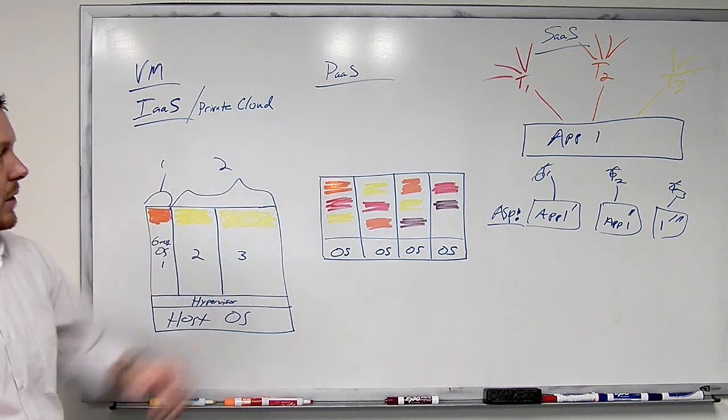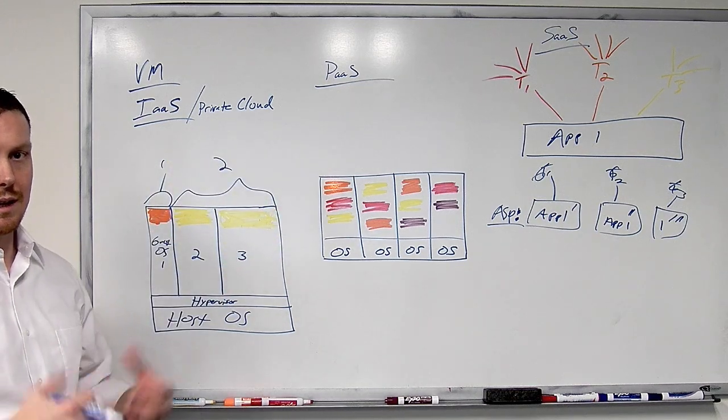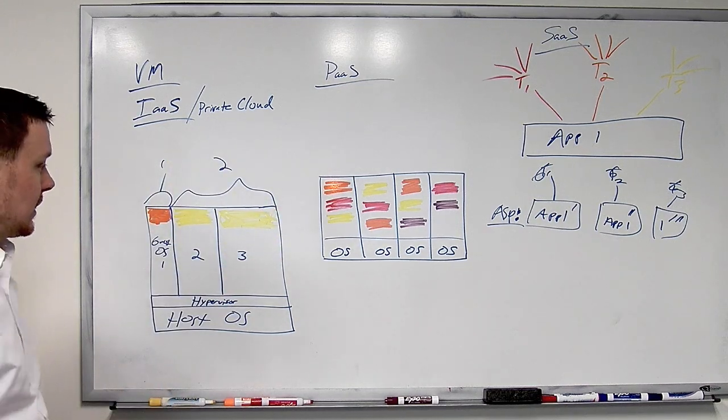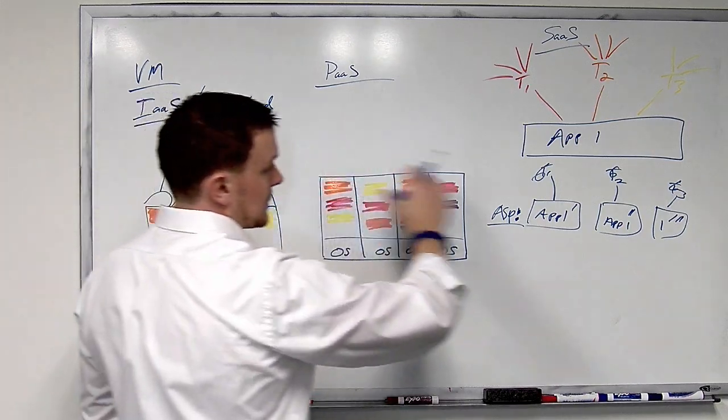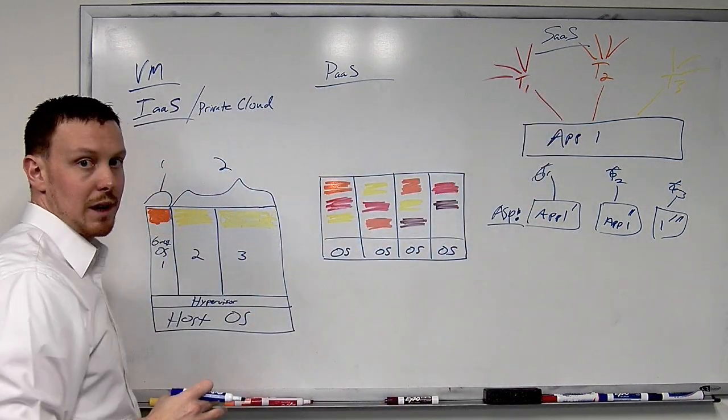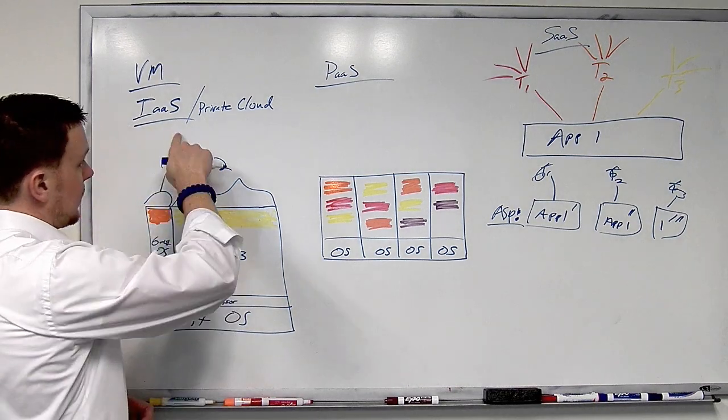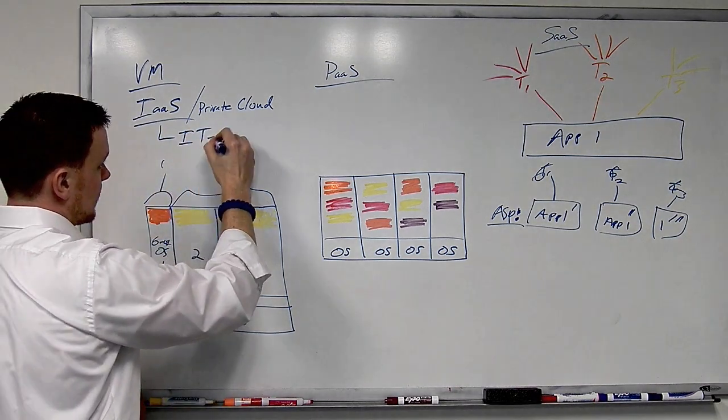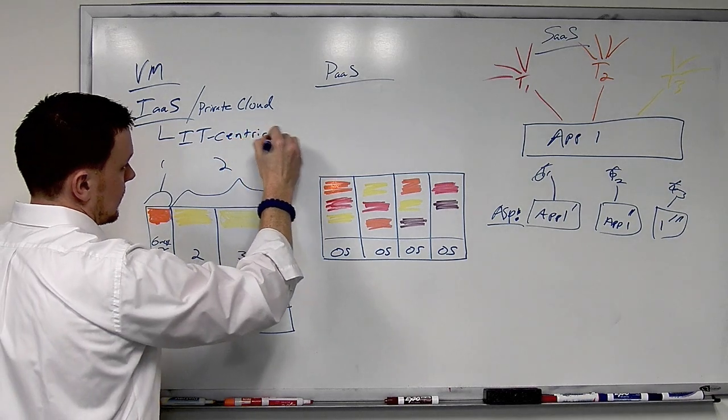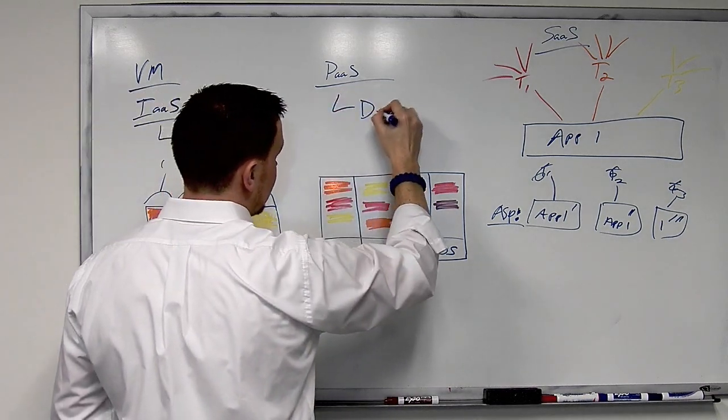So this is an overview of the different tenancy models in cloud computing. Again, it's important to understand the differences between infrastructure as a service, platform as a service, and software as a service, and the different tenancy models they provide. To remind you, infrastructure as a service, this is IT-centric. This is very dev-centric.